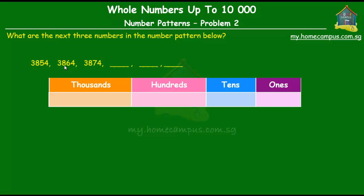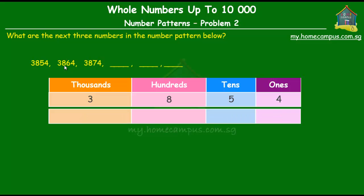We have the place value chart here and we fill in the first number, which is 3854, and the second number, which is 3864. Now we see that between the ones there is no difference, between the tens there's a difference of one. So going from the first number to the second number, the tens changes by one. Now the hundreds — there's no difference there, and the thousands also there's no difference there.